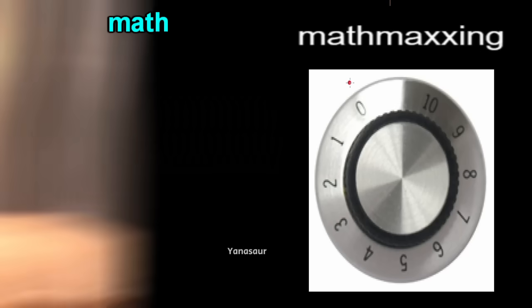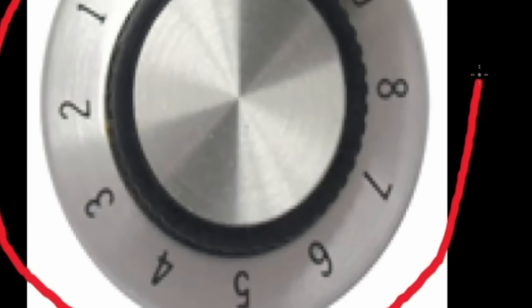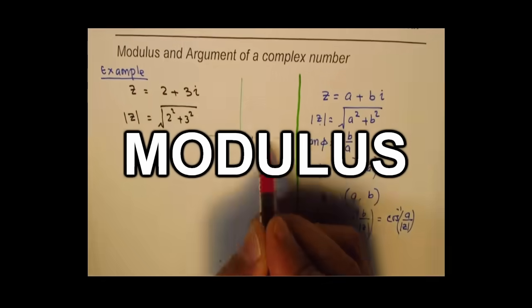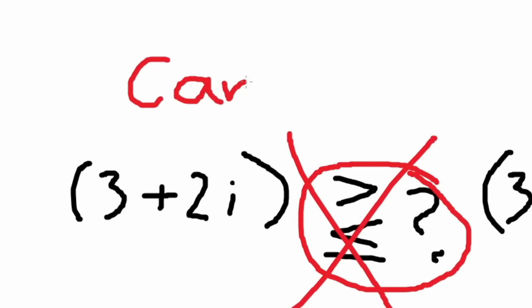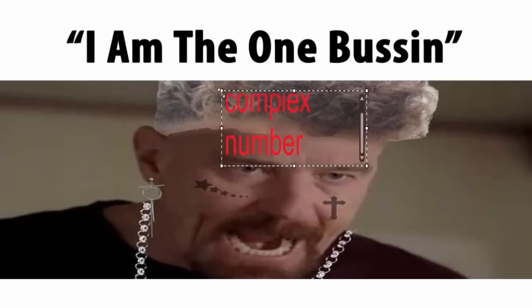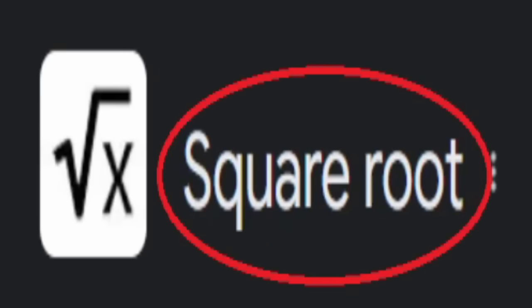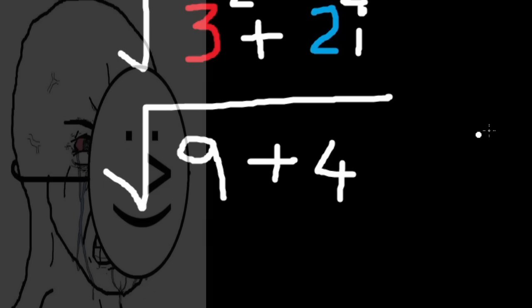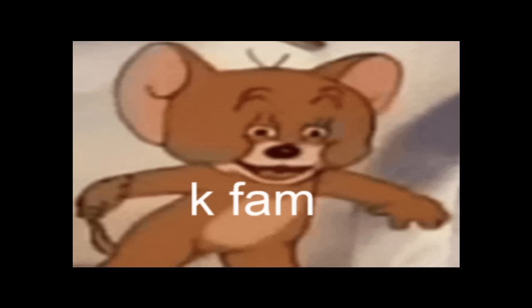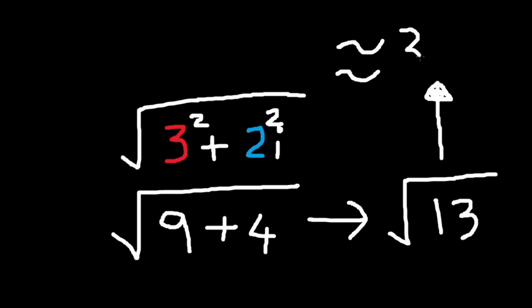Now turn your math dial up to 11 out of 10, because now we're gonna look at multiplication. If you wanted to find if a complex number was bigger than another, you can't just compare them directly. To get the modulus, you draw the square root symbol, and inside it you square the real number and the imaginary number and add them together. Now do the basic arithmetic, and there you go.